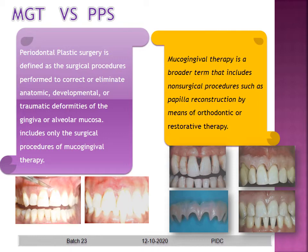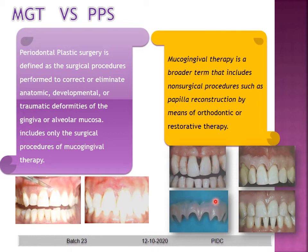To explain with an example: here you have a black triangle — the papilla has receded. In this case we performed a surgical procedure placing PRF into the area to correct the black triangle. But where there is a larger black triangle and surgical therapy will not help, we took the help of a prosthodontist to create a prosthesis placed over these black triangles to eliminate them. So surgical therapy means periodontal plastic surgery, and any other therapy including orthodontic or restorative therapy comes under the term Mucogingival Therapy.